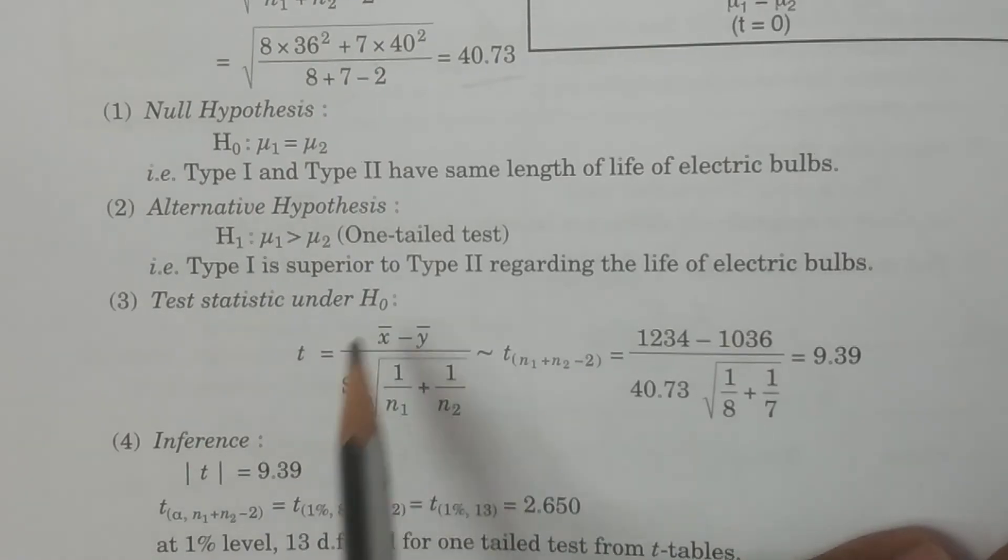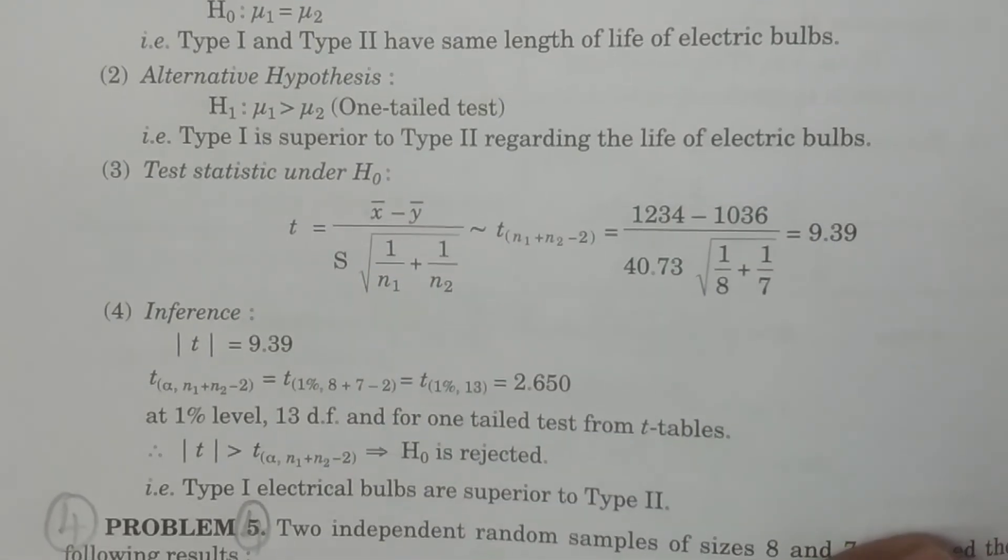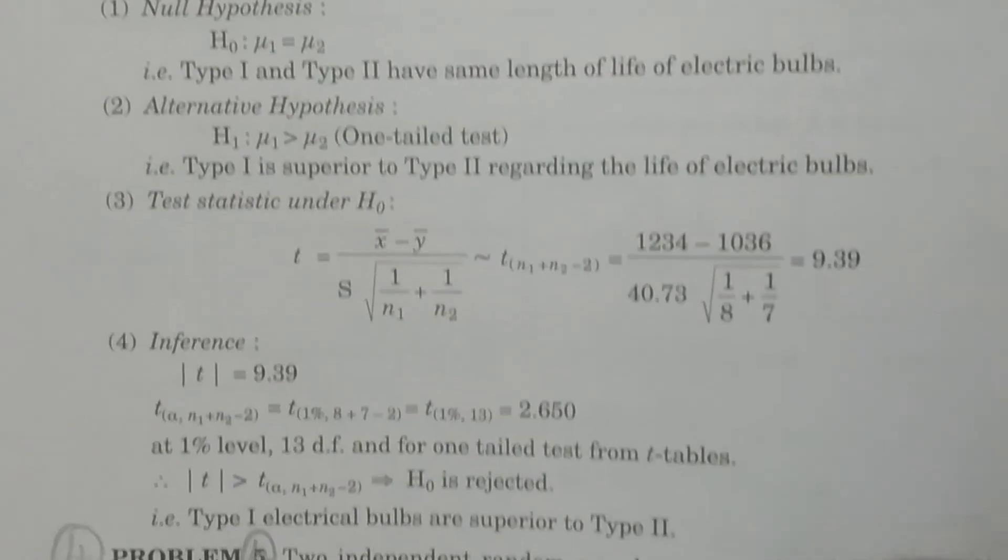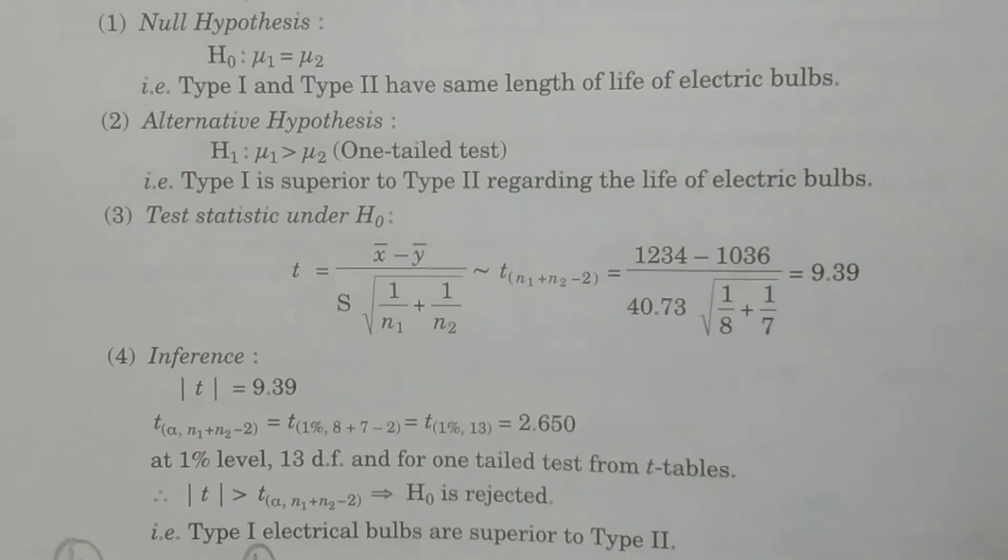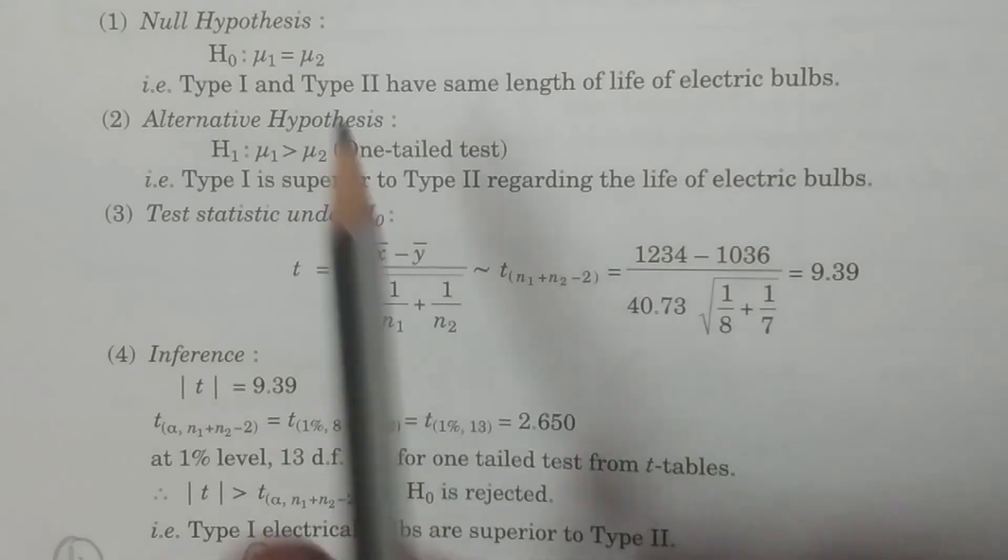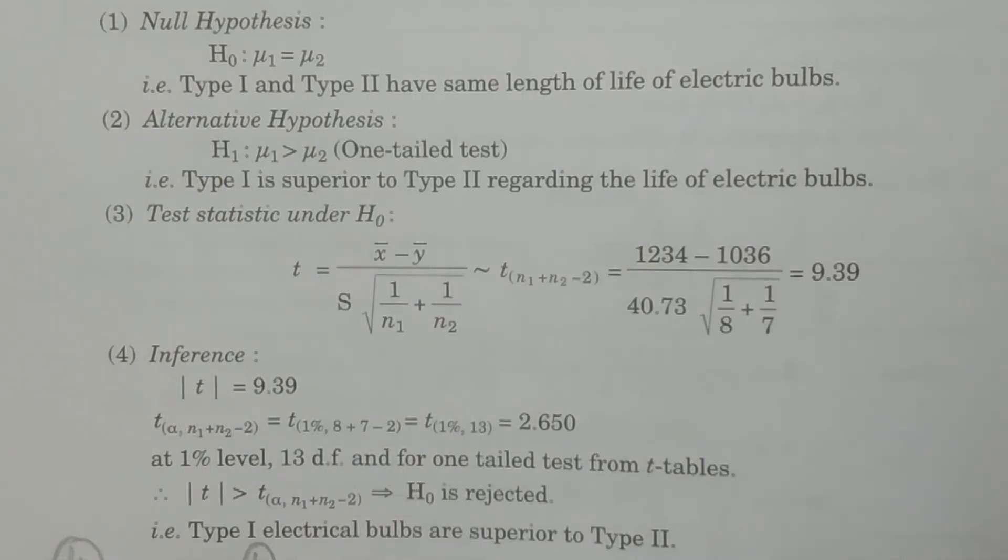Now, test statistic under H₀, which means what we have to calculate here, what we have to consider: the case here σ1, σ2 are not known.